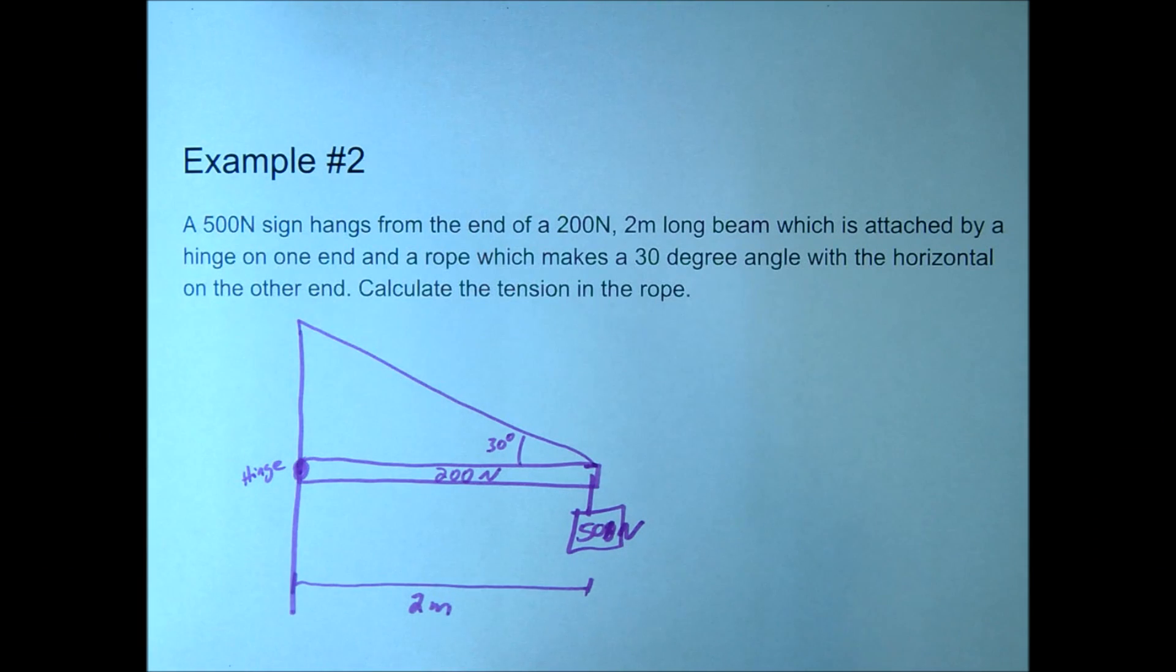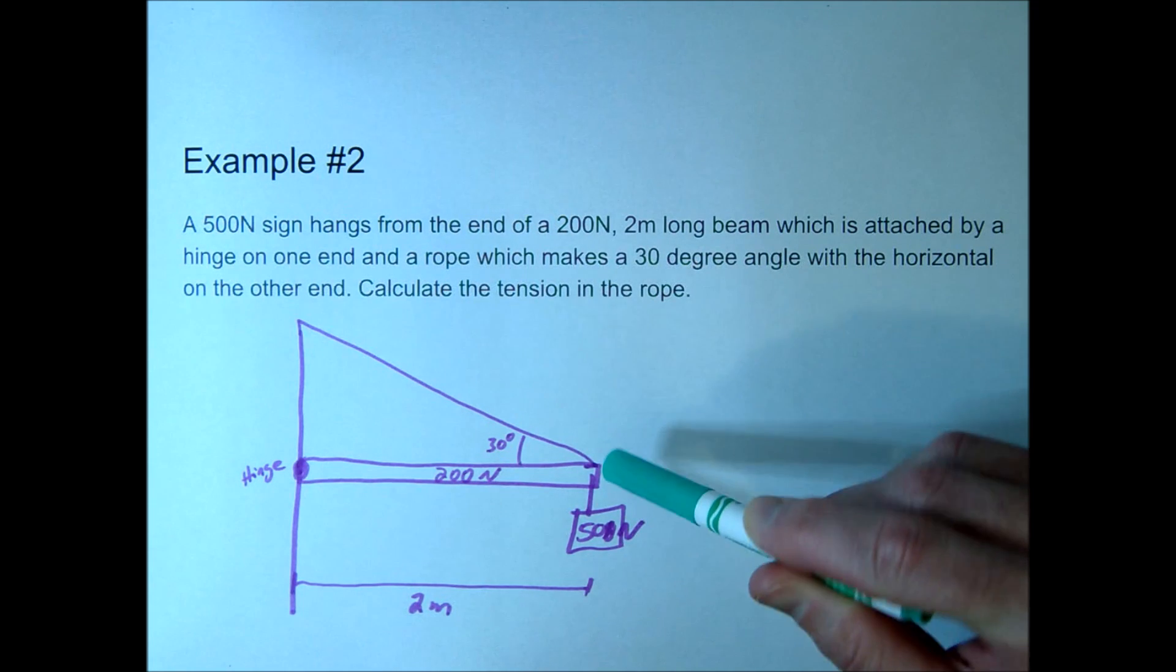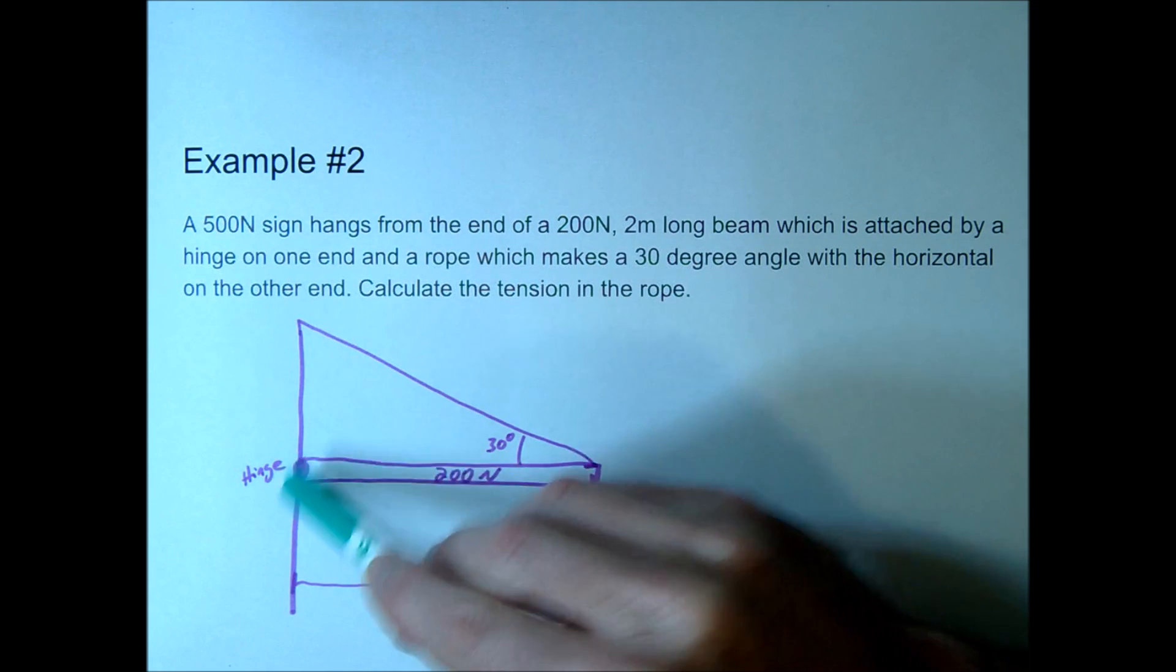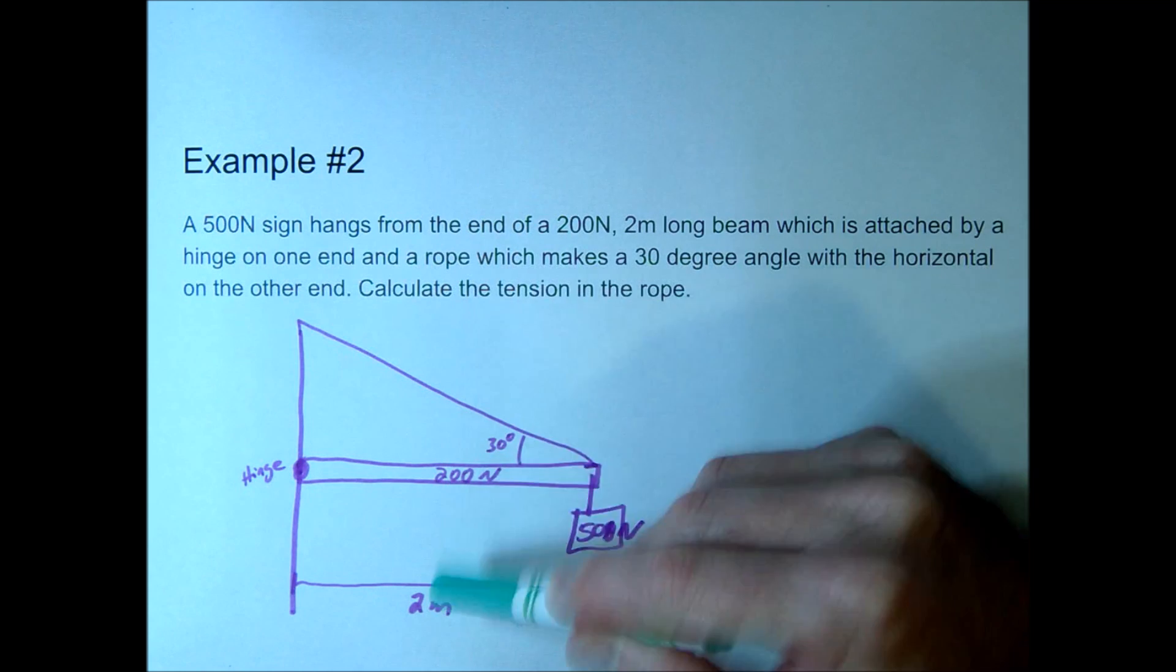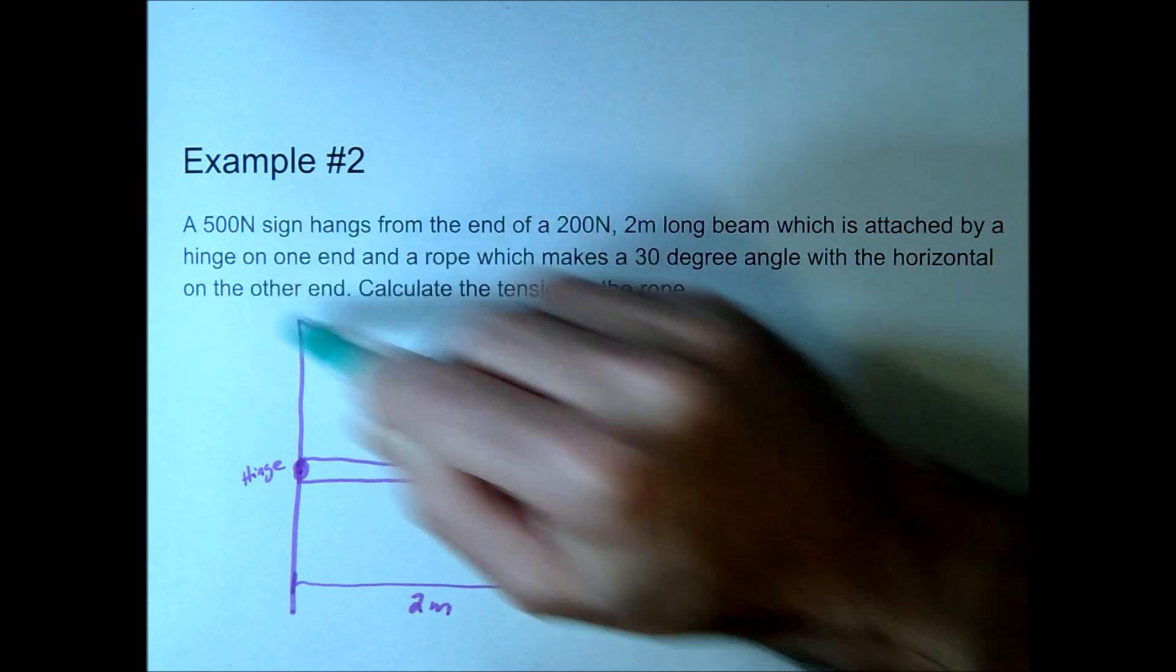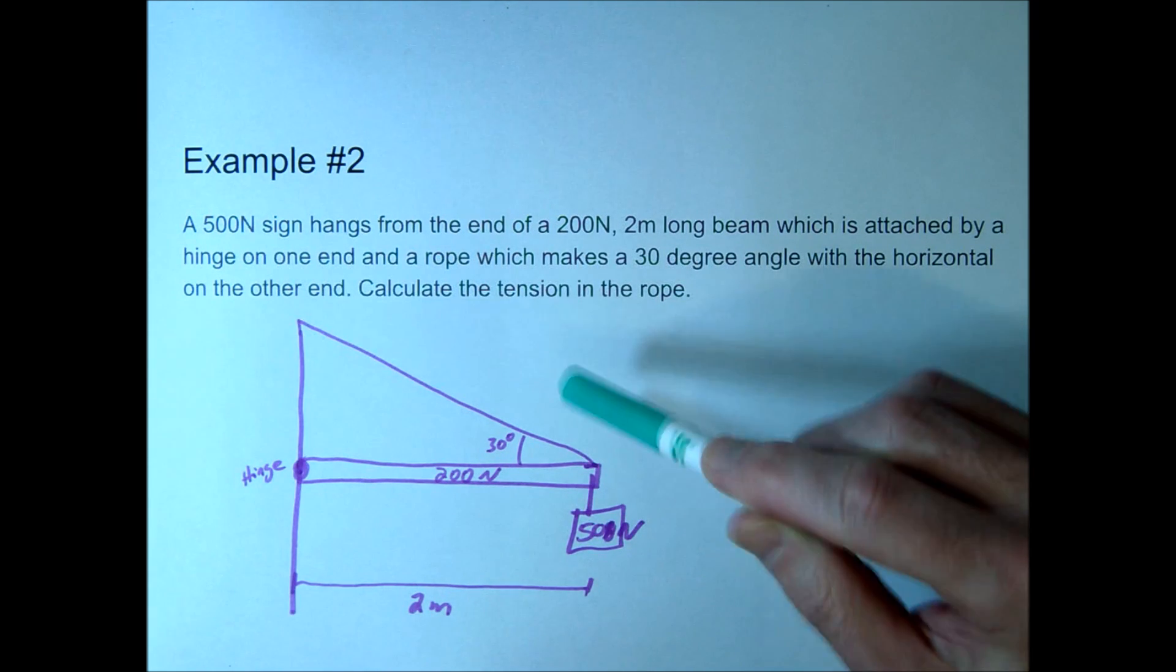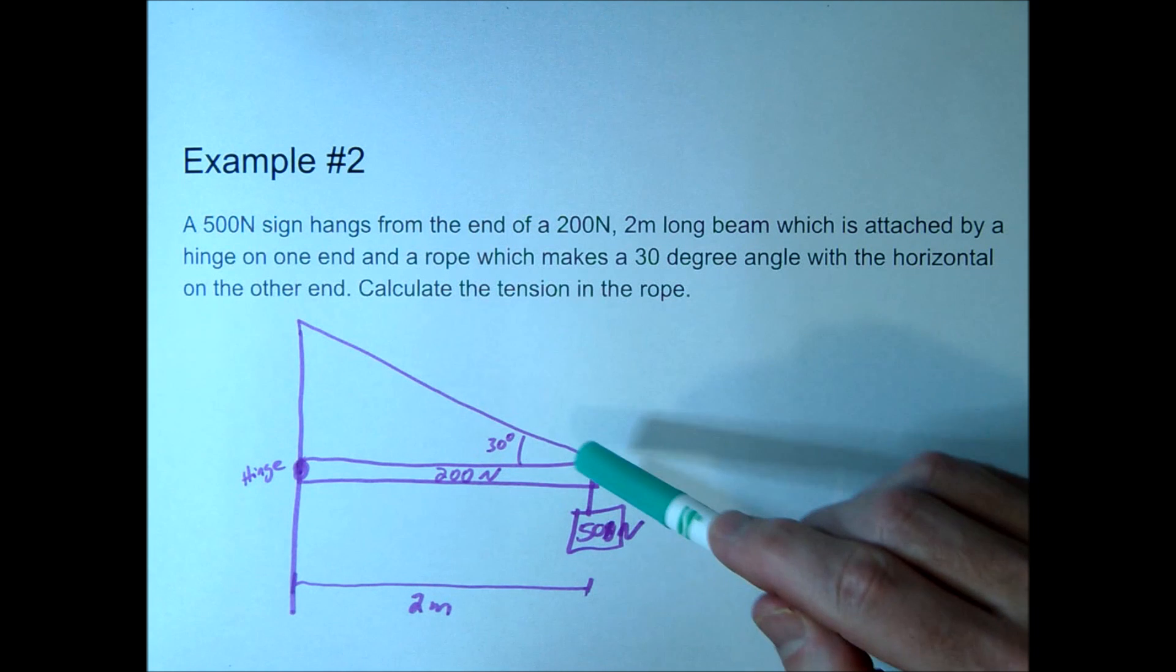Alright, let's try this problem. We have this sign that we're going to hang from this board, and then we're going to attach a hinge here so it's able to move up or down, and then we're going to hang it by a wire, by a rope, so that it's in a state of equilibrium. So the question is, what is the tension here in the rope?